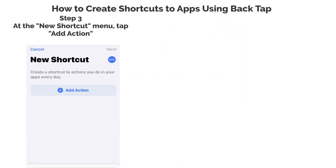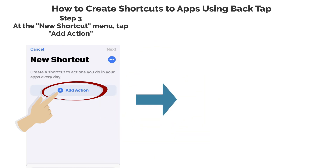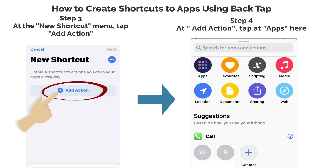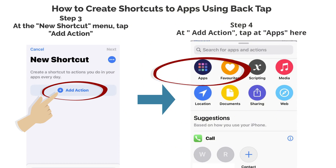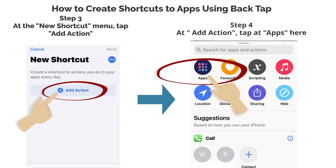Step 3. At the new shortcut menu, tap add action. Step 4. At add action, tap at apps here.